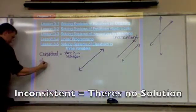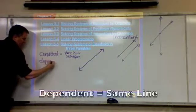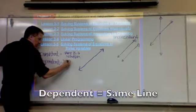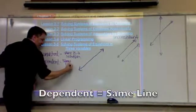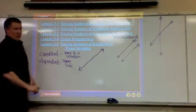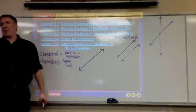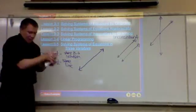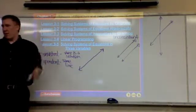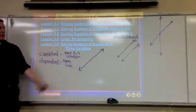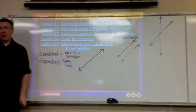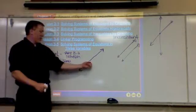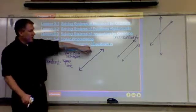We'll have another word: dependent. Dependent means that they're the same line — same graph, same equation. Whatever one is, the other one is. That's why it's called dependent. So the word dependent means it's the same line — the one that's on top of the other.